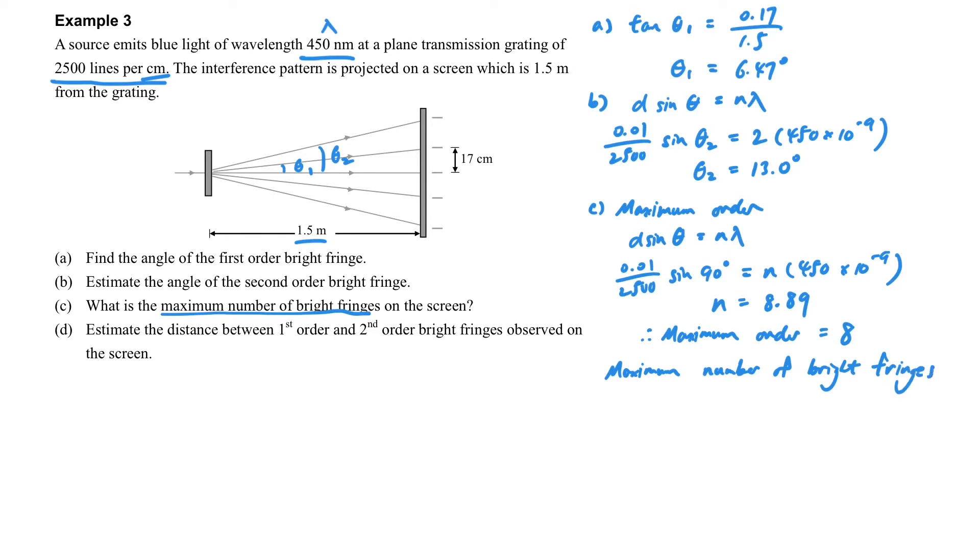The maximum order is 8 only, even though n is 8.89. If you get the idea, we know that the number of bright fringes we can observe is 8 plus the zeroth order plus 8, so it is 17 in total. If you miss this out, you can check back to the previous video about this part.